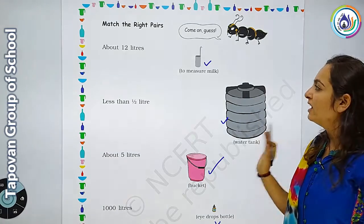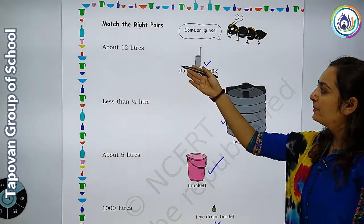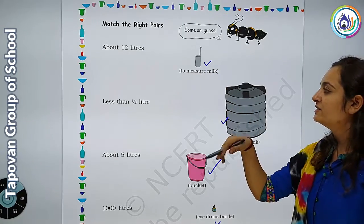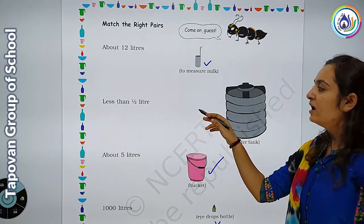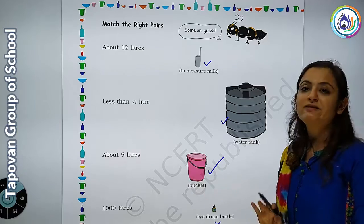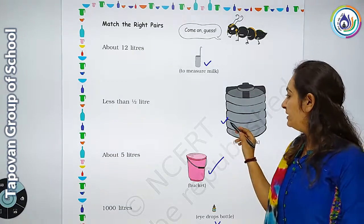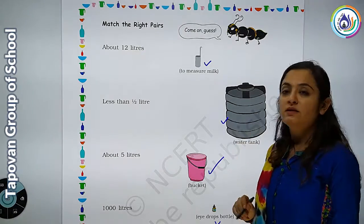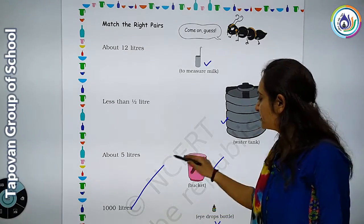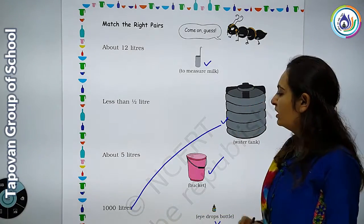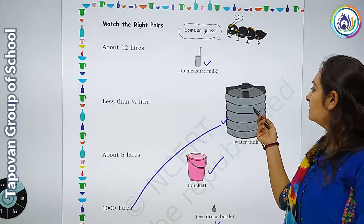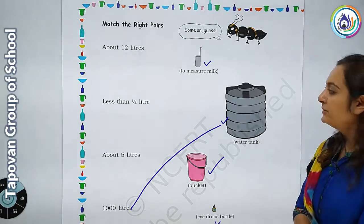तो सबसे ज्यादा measurement किसका है — यहाँ पे लिखा हुआ है about 12 liters, less than half liter, about 5 liters, और 1000 liters। तो यह tank बड़ी है, इसके अंदर कितना पानी आ जाता होगा — 1000 liters। तो we will match 1000 liters with this water tank.